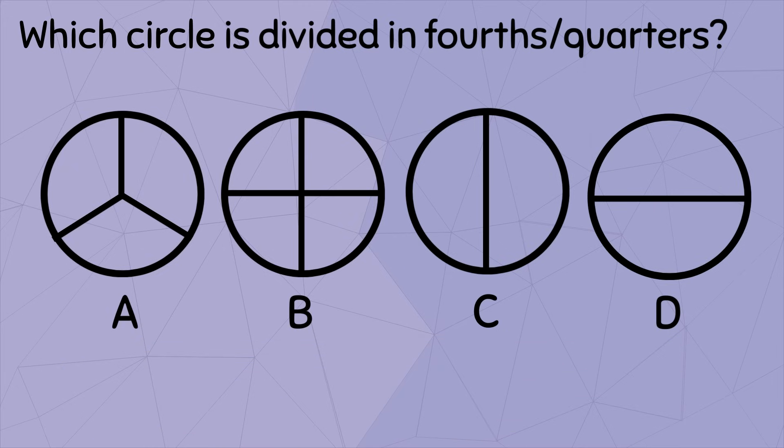Circle A is divided into three parts. So that's a no. Circle B is divided into four parts that are all equal. So this is correct!